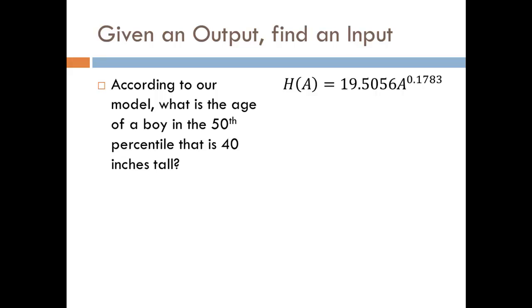Now if we're given an output can we find the corresponding input? So again for example suppose we want to compute the age of a boy in the 50th percentile who is 40 inches tall. Well in this case the 40 inches is the height. So that means we're going to put 40 in for the H of A on the left side of our equation.